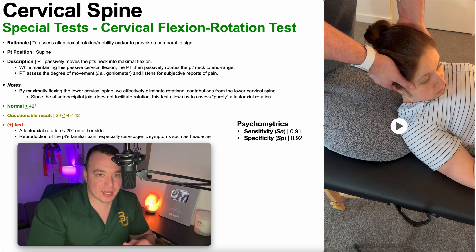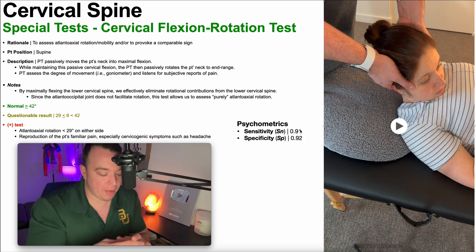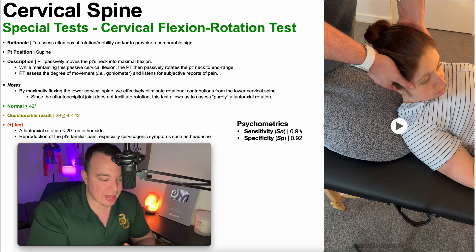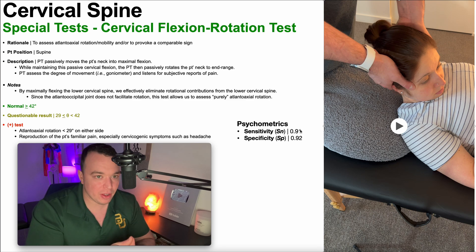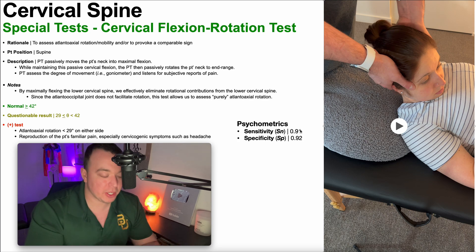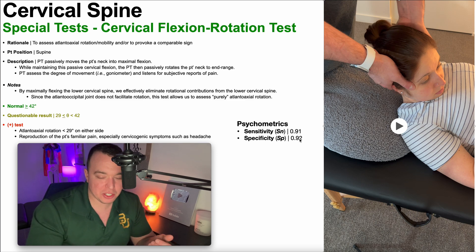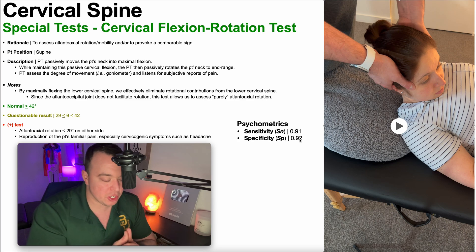The psychometrics of this test are very good. The sensitivity is 91% and the specificity is 92%. On the sensitivity side: if the cervical flexion rotation test is negative, there's a 91% chance that this person does not have a pathology of the upper cervical spine — particularly the atlanoaxial joint or cervicogenic headache. And if the test is positive, there's a 92% chance that the person does have those pathologies.